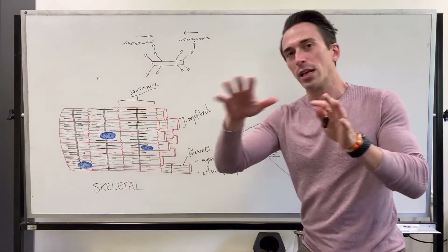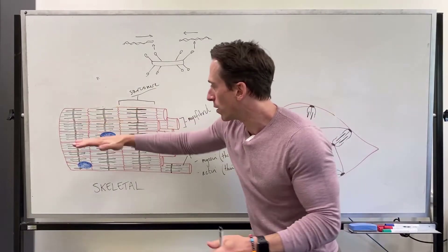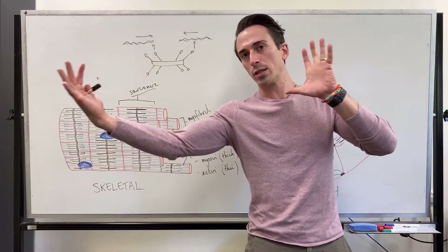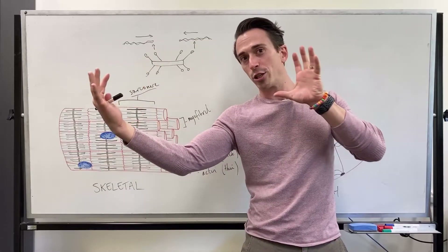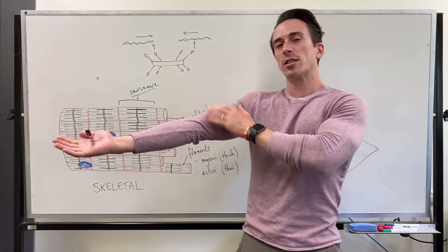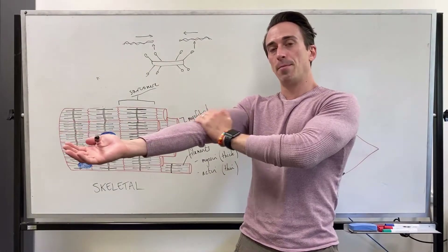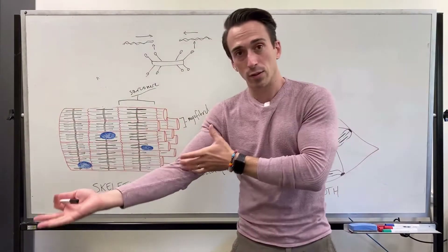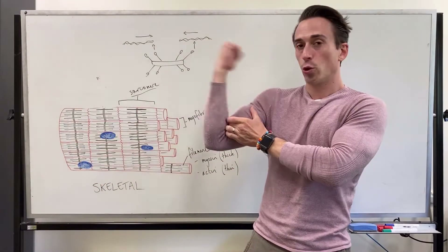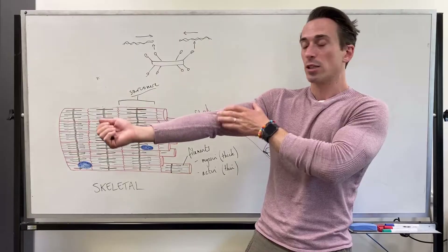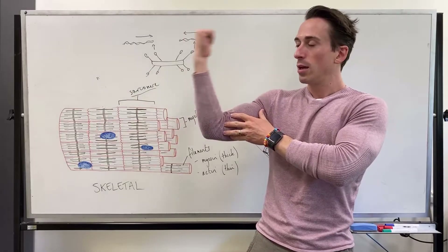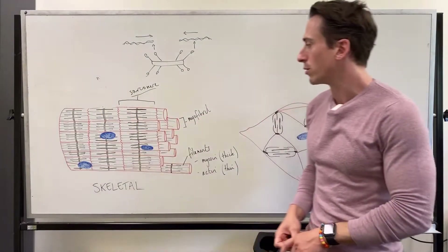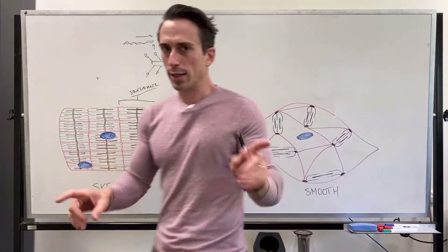Because skeletal muscle is aligned in parallel, it shortens in one particular direction. Take the bicep for example — which has multiple muscle cells associated with it. When it contracts, it shortens, and because it's attached from one bone to another bone, it moves that bone. That's the whole point of skeletal muscle.